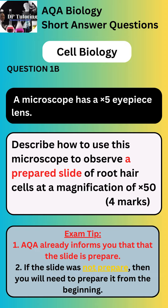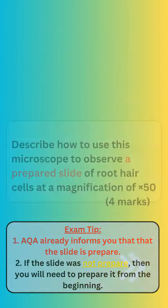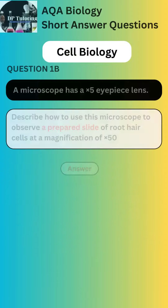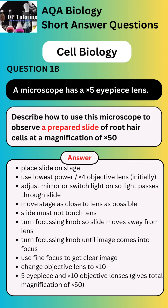If the cells were not prepared, then you would need to prepare them. However, AQA already informs you that the slide was prepared, so you just need to go straight ahead and describe the process. There are many points to choose from to get the four marks for your description. A good starting point is placing the prepared slide on the stage, since the question asks you how you would view the root hair cells.